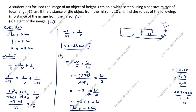The object height ho is 3 centimeter, so the object is drawn here with height 3 centimeter. The image height hi is minus 6, so the image is drawn below the axis, indicating an inverted image. The center of curvature is double the focal length — f is 12, so the center of curvature is at 24. Drawing the ray lines: one ray goes from the object to here, another joins from here, with arrows drawn accordingly.